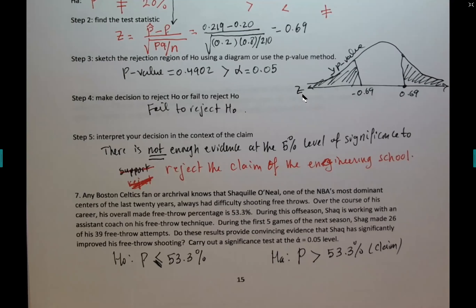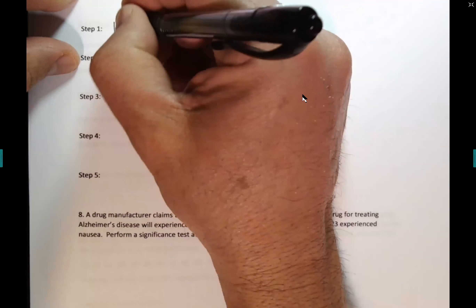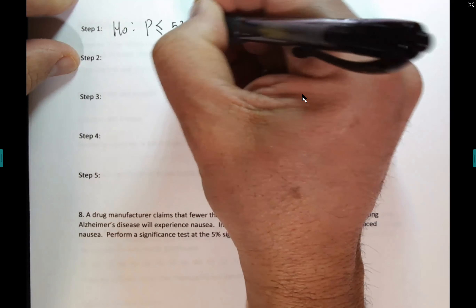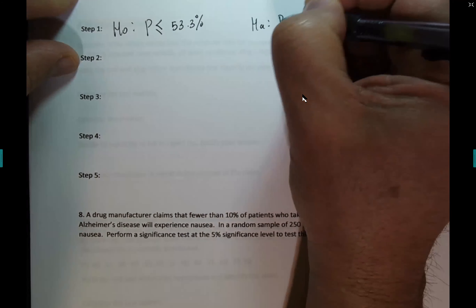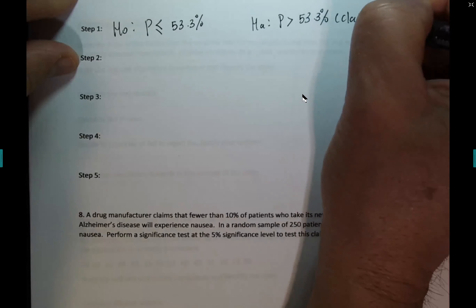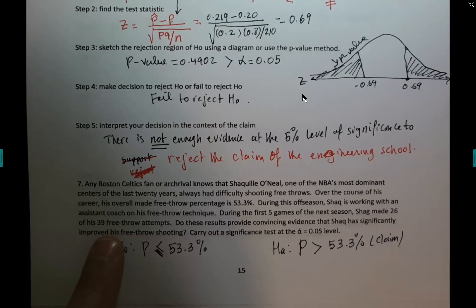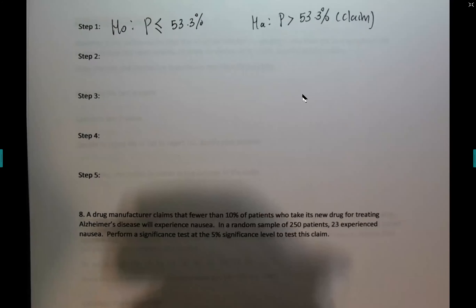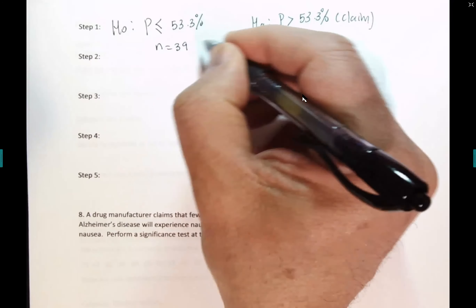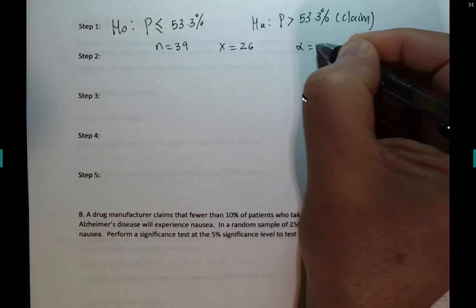Improve means go bigger beyond what he has. H0: p ≤ 0.533, HA: p > 0.533 — that's the claim. What's x and n? Shaq made 26 of his 39 free throw attempts, so n = 39 and x = 26. Alpha = 0.05. That's all you need for the calculator — it's a 1-PropZTest.